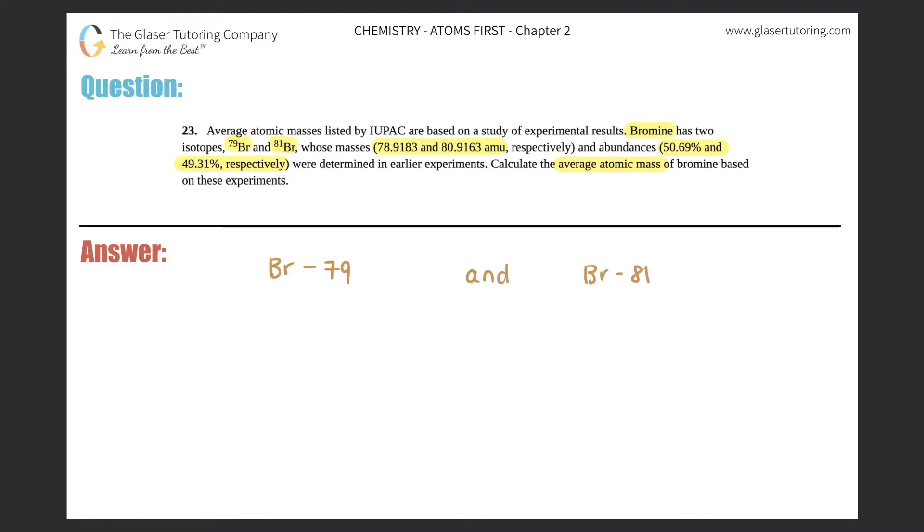Now here, they gave us two masses. They say respectively, which means that the first one that they talk about is in regards to the first sample that they talked about. So this would be linked with Br-79, and the second one that they talked about links to the second one that they listed. So this 80.9163 would be linked to the second one. So we got 78.9183 AMU, and then we have 80.9163 AMU.